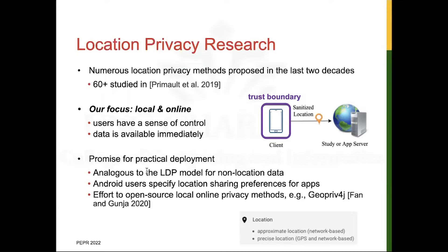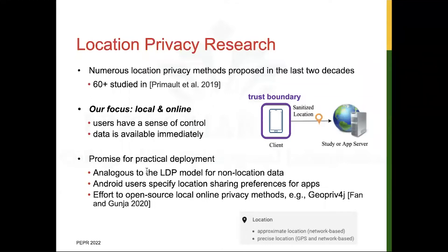Local online privacy methods hold great promise for practical deployment. The setting is analogous to the local differential privacy model for non-location data adopted at Google and Apple. In Android, users can choose to share less precise locations with apps, which can be considered a simplified approach to local online privacy. Lastly, there have been research efforts to open source local online privacy methods to help developers integrate location privacy in their applications.